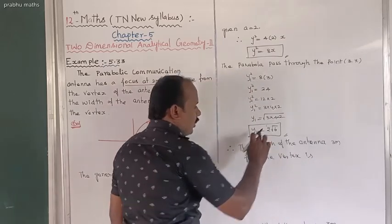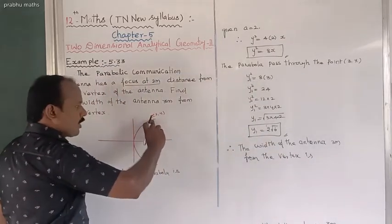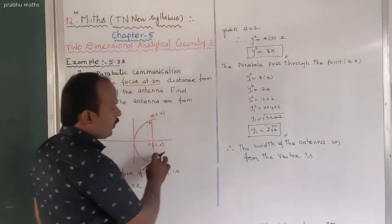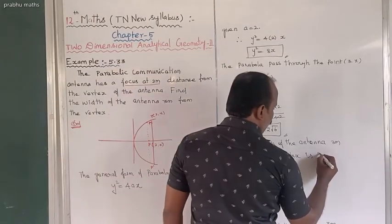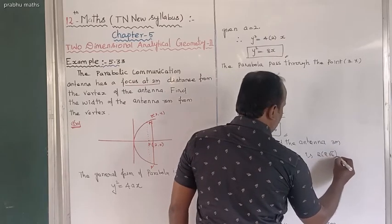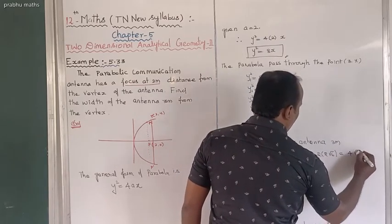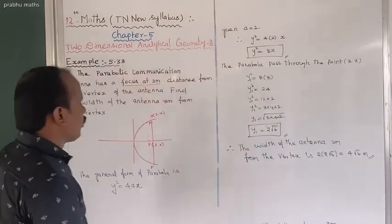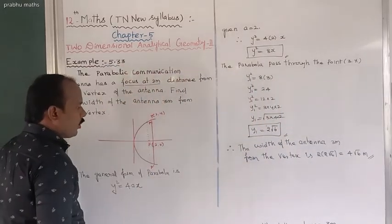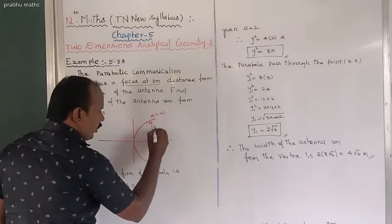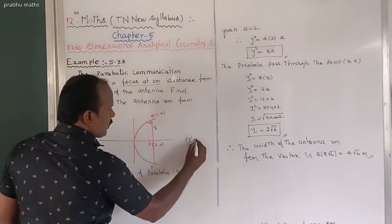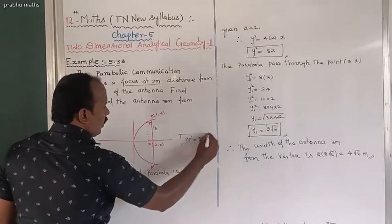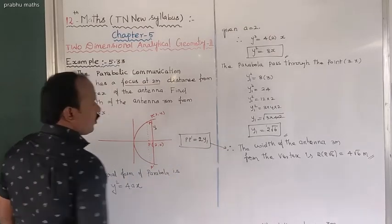The width of the antenna 3 meters from the vertex is P to P dash, which equals 2 × y1. So the width = 2 × 2√6 = 4√6 meters. That is the width of the antenna.